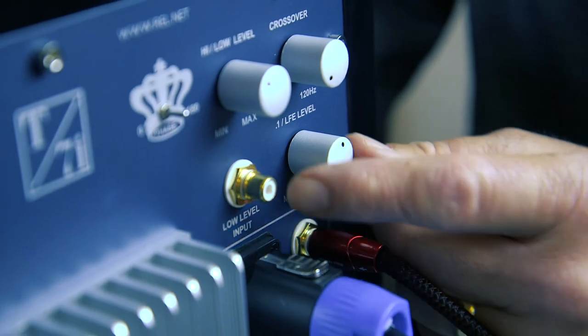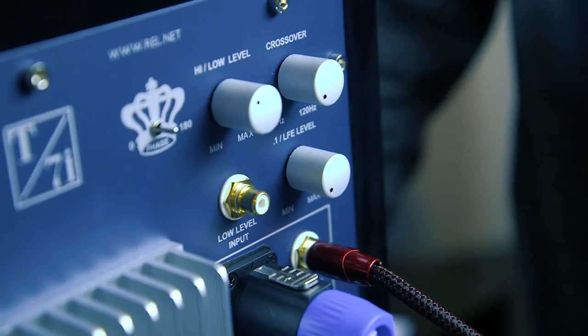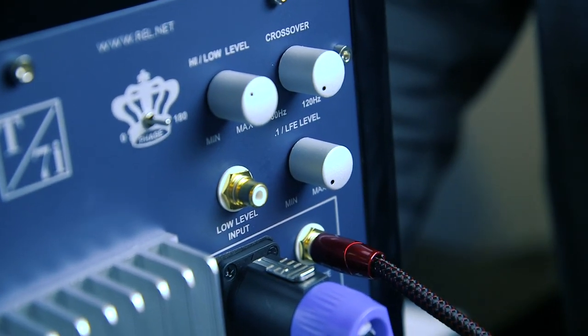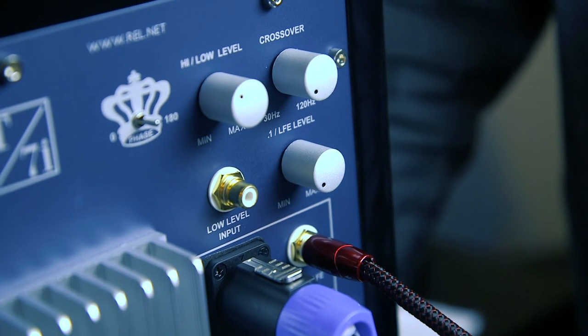If you're using this method in a stereo only system, be sure to turn the volume all the way down on the LFE input of the REL. The REL will not be playing any signal through the LFE input, but it will be getting its ground from the RCA collar.